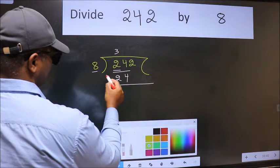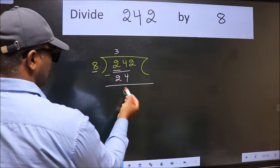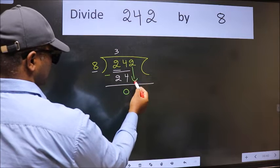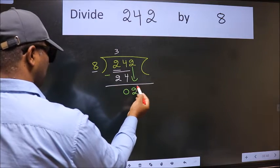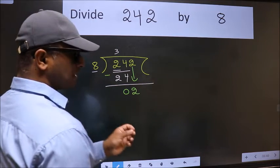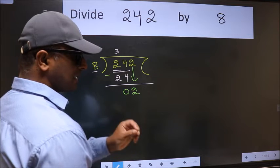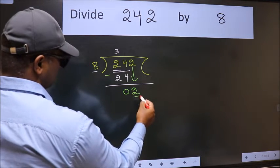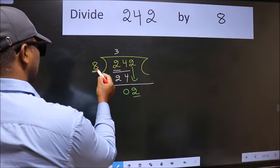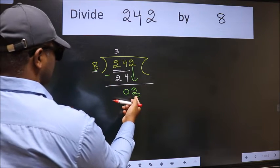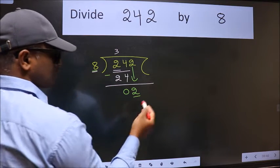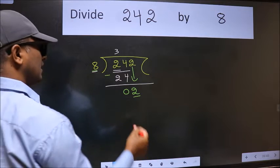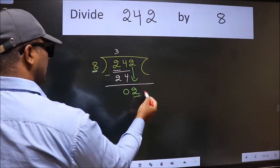subtract, we get 0. After this, bring down the beside number, so 2 down. After this step, the mistake happens. And the mistake is this: here we have 2 and here 8, 2 is smaller than 8, so what many do is they directly put dot, take 0.